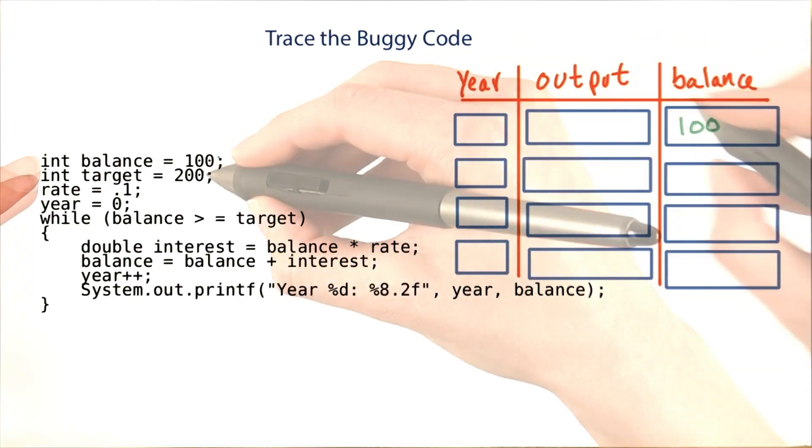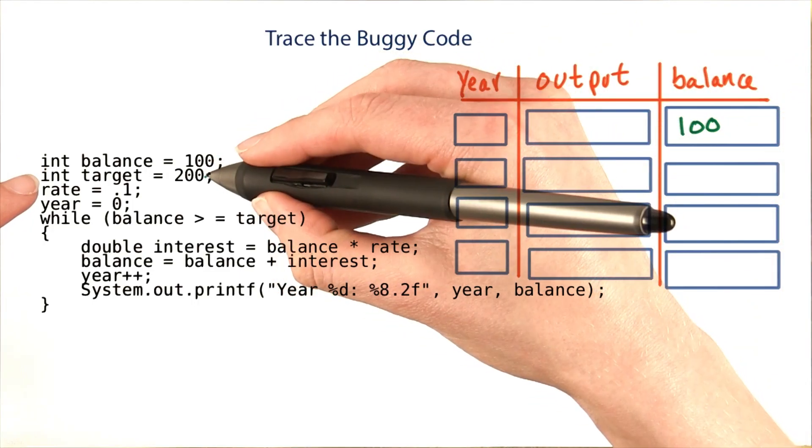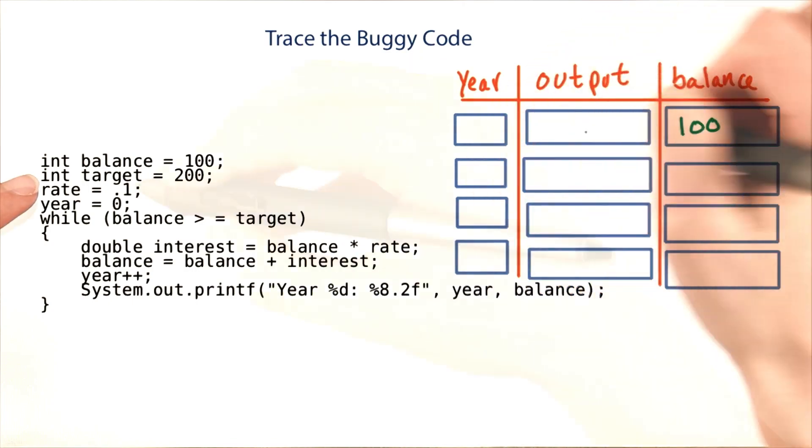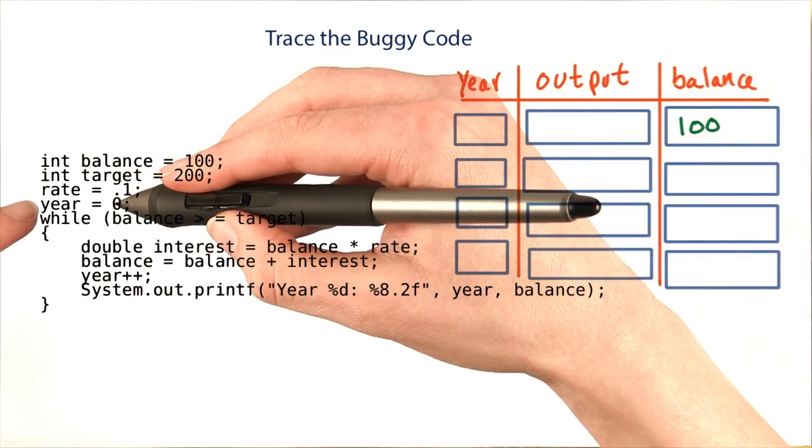We initially set balance to 100 and target to 200, but target won't change. So I won't write that down over here. Rate also won't change. The year starts at 0.